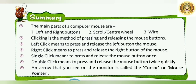Let's see the summary of the lesson. The main parts of the computer mouse are the left button, right button, scroll or center wheel, and wire. Clicking is the method of pressing and releasing the mouse button. Left click means pressing and releasing the left button. Right click means pressing and releasing the right button. Single click means pressing and releasing the left button once. Double click means pressing and releasing the left button twice quickly. The arrow you see on the monitor is called the cursor or mouse pointer.